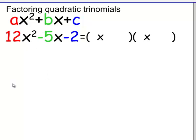Next thing to do is think about the a, b, and c coefficients. Here they are: a equals 12, b equals negative 5, and c equals negative 2.